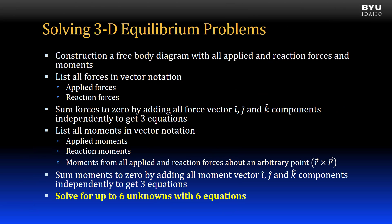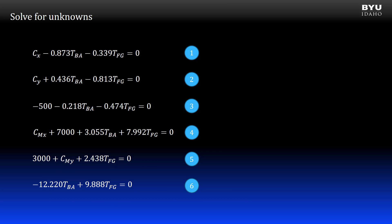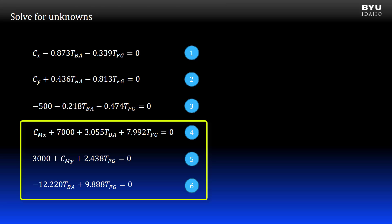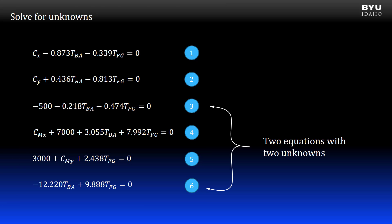The last step is to solve for the unknowns in our six equations. Here are all six equations — the first three from summing x, y, and z force components, and the last three from summing x, y, and z moment components. Note that equations 3 and 6 have the same two unknowns, so TBA and TFG could be found by substituting one equation into the other, and with those two variables known we could solve for all the rest. This is a fine method, though it is slow. A faster way is to solve the six equations simultaneously, so that is what I will do.